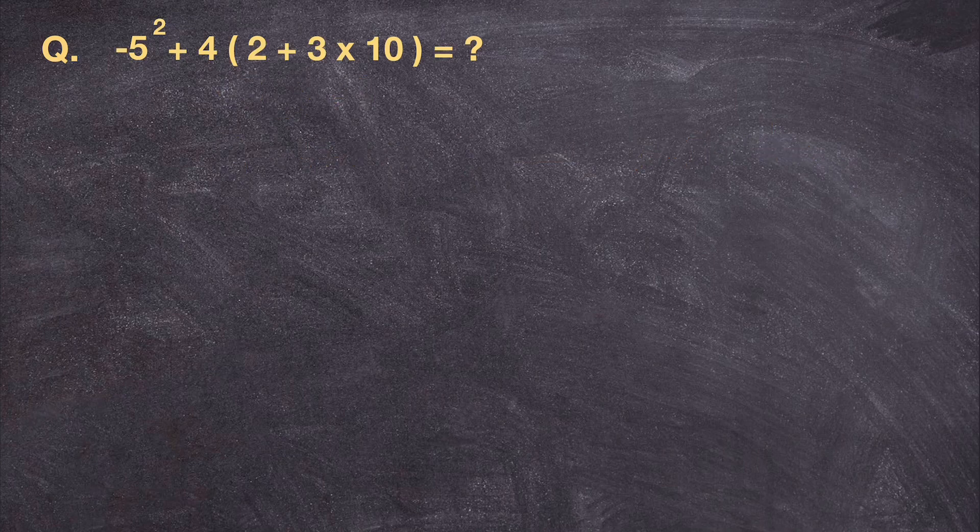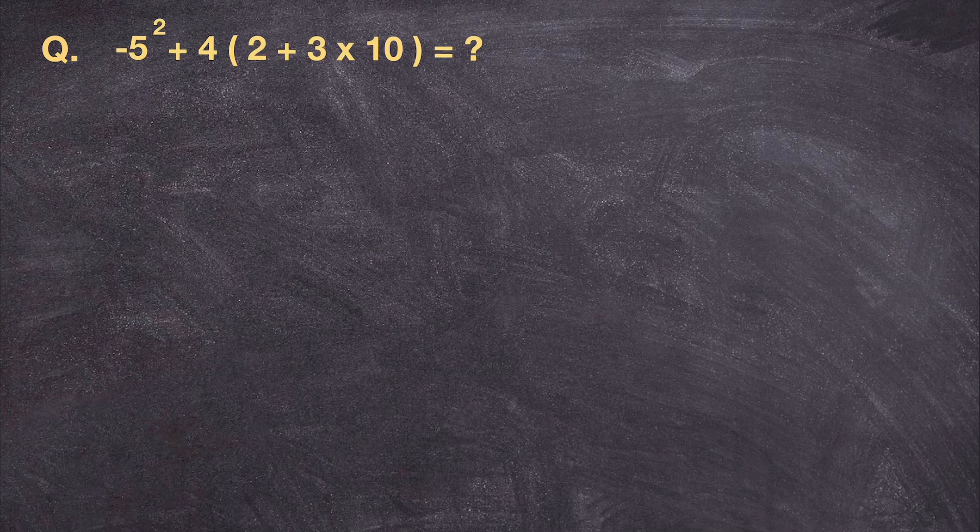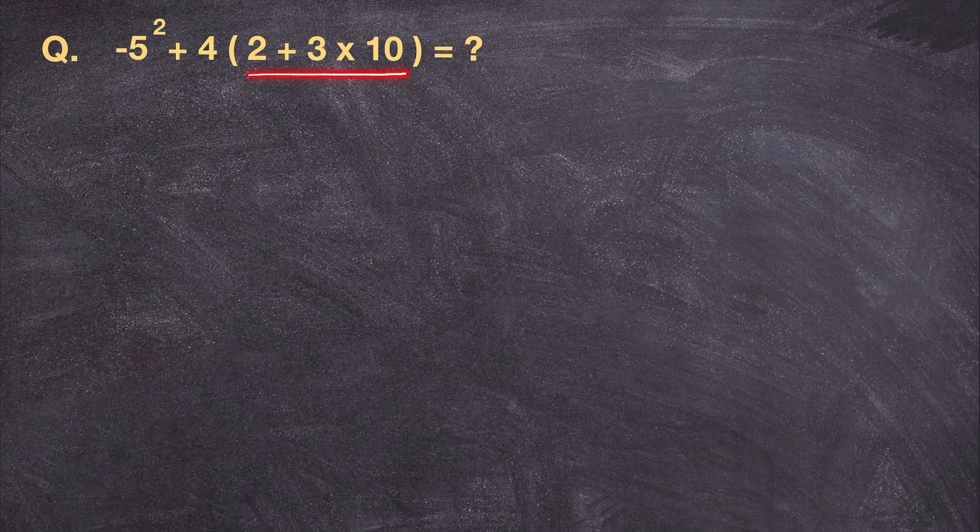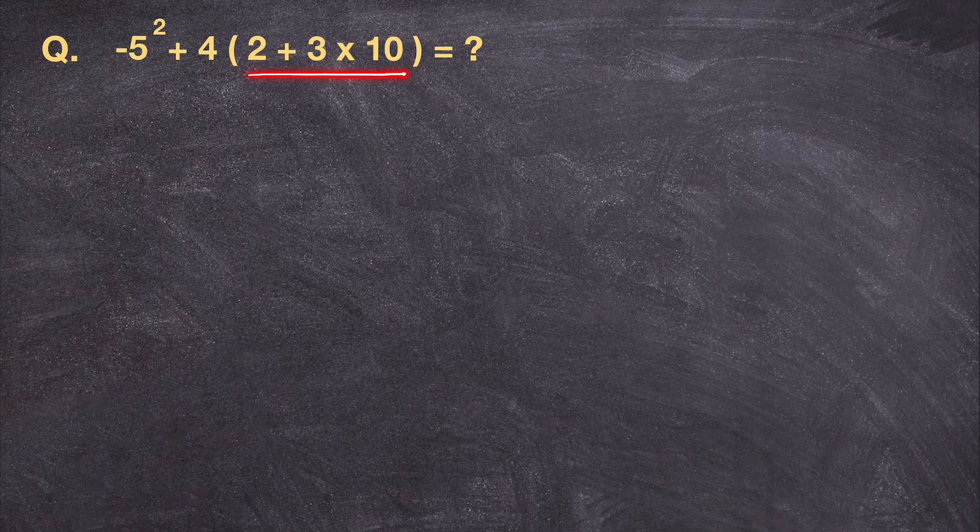Why this is a mistake? Well, because before you distribute, since there's a parenthesis, what you need to do is you need to solve out numbers that are within the parenthesis first. And also, you also need to address this power.